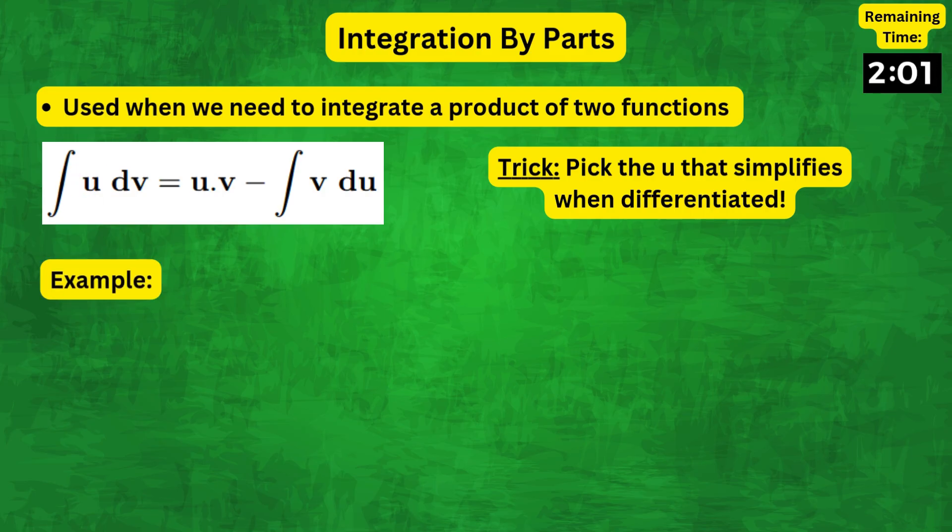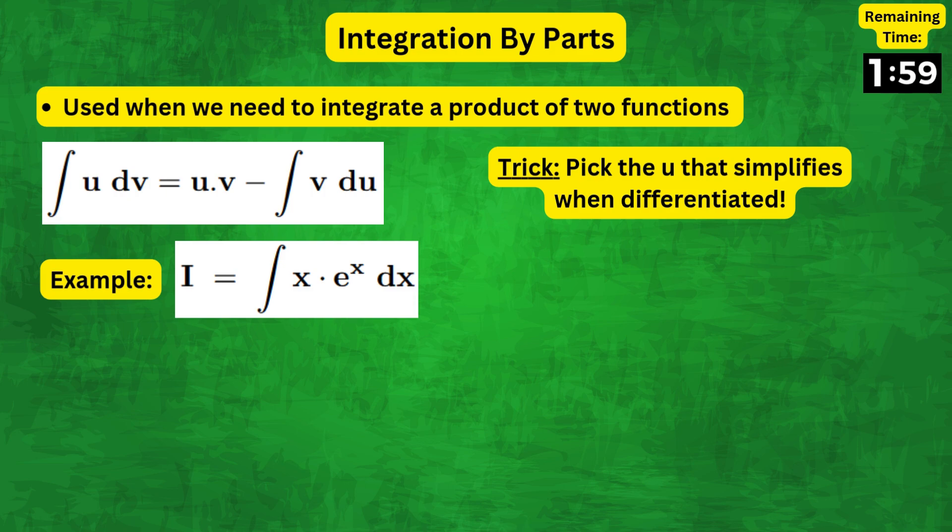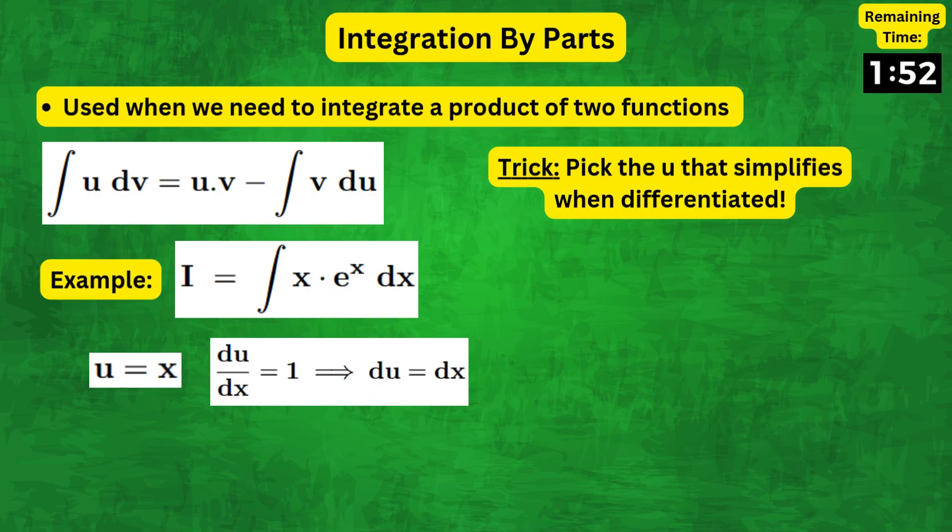To illustrate this, let's consider the integral of x e to the x dx. So, between x and e to the x, it's easier to choose u as x, as that differentiates down to a constant. And therefore, dv can be taken as e to the x dx.